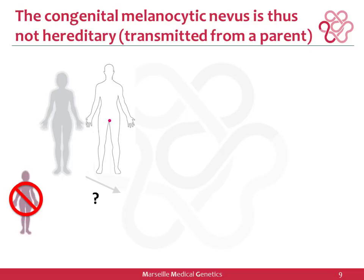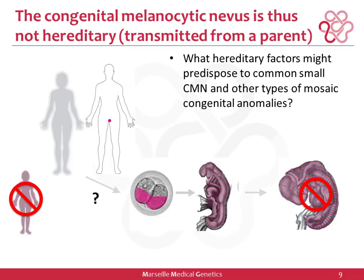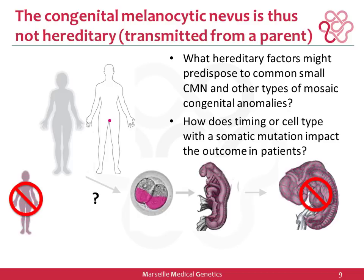Imagine a gonad that acquired a mutation later in life in NRAS or BRAF, and one of the two cells giving rise to the fertilized egg carries the mutation — that would lead to all cells in the progeny carrying the mutation, which is not viable. What we are very interested in is understanding hereditary factors that might predispose to acquiring mutations leading to common small CMN, which occur in more than one in a hundred births, and other mosaic congenital anomalies.